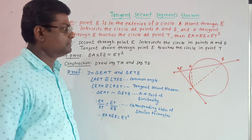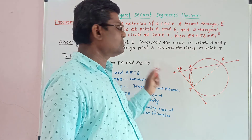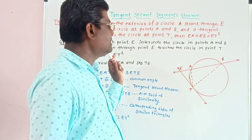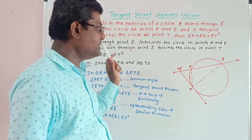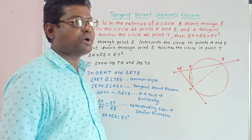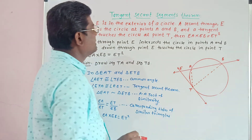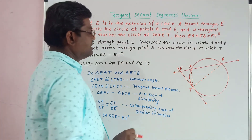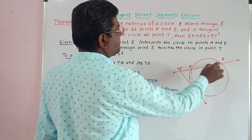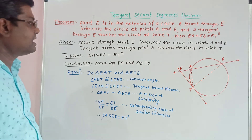Next is the tangent-secant segments theorem. AB is a secant through point E, which is in the exterior of the circle, intersecting the circle at points A and B. ET is a tangent through point E touching the circle at point T. Then EA × EB = ET².